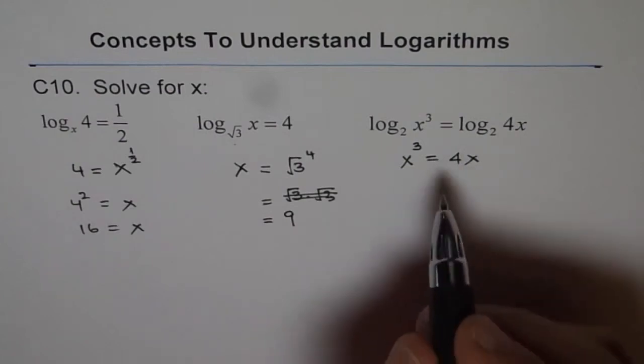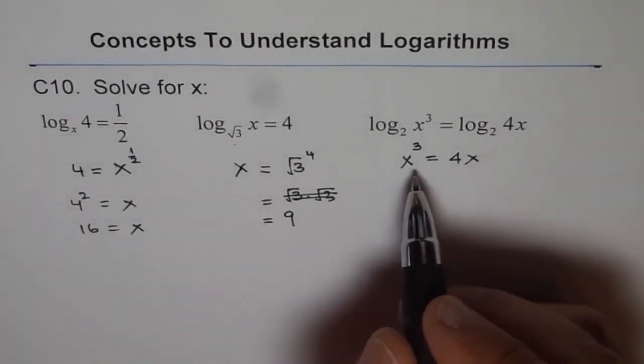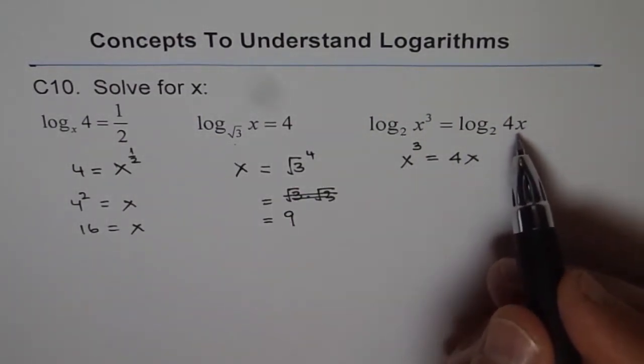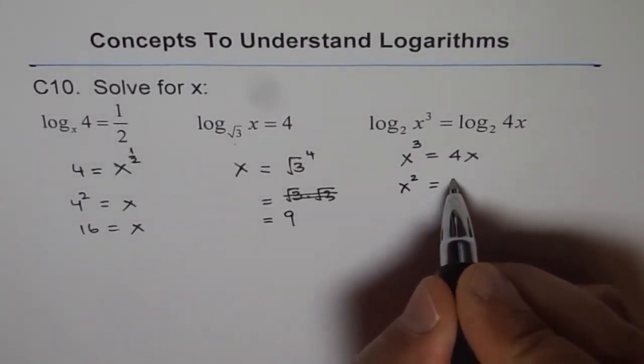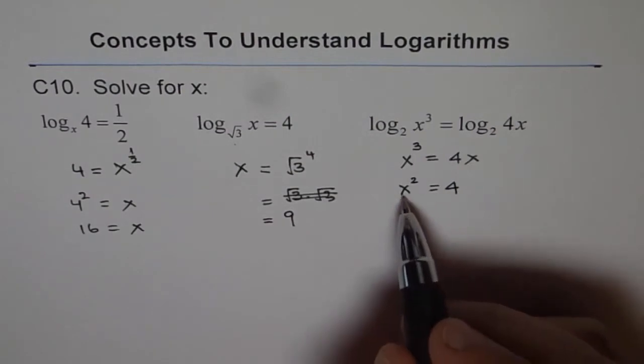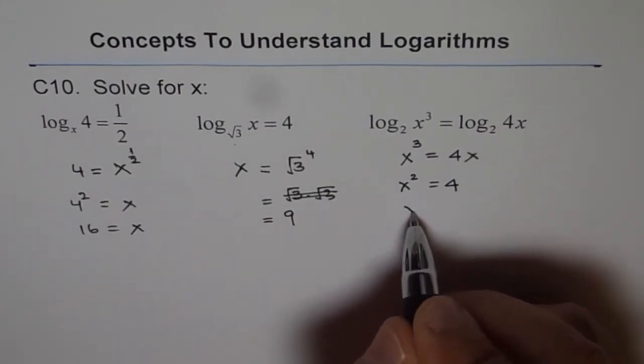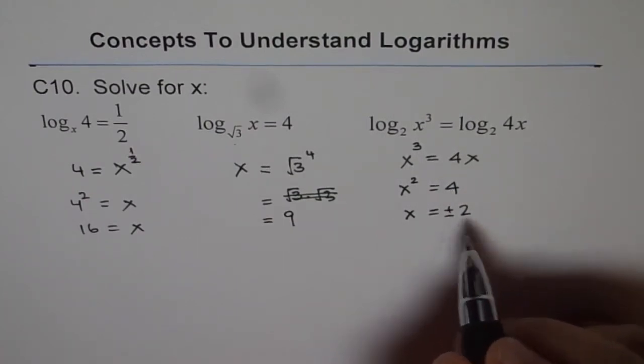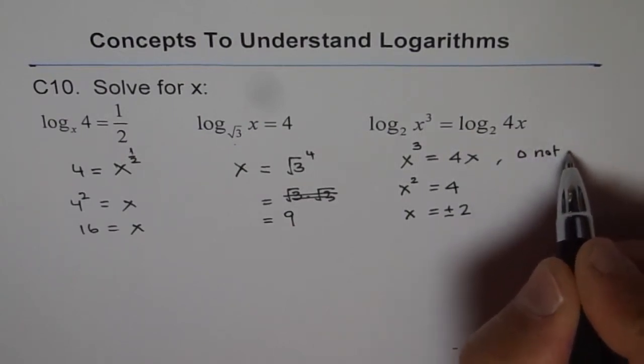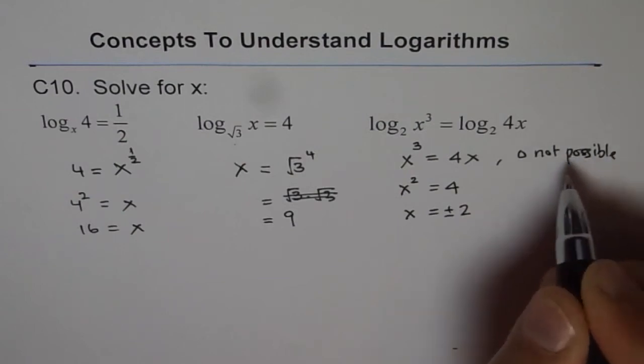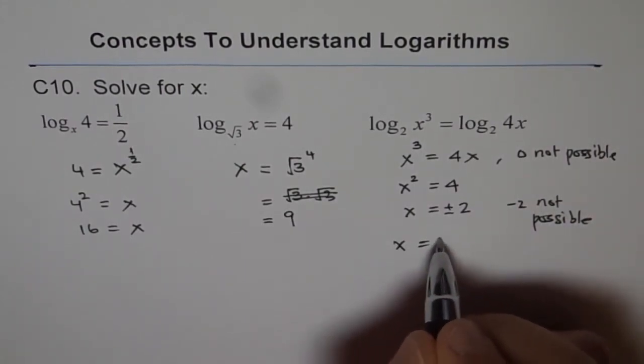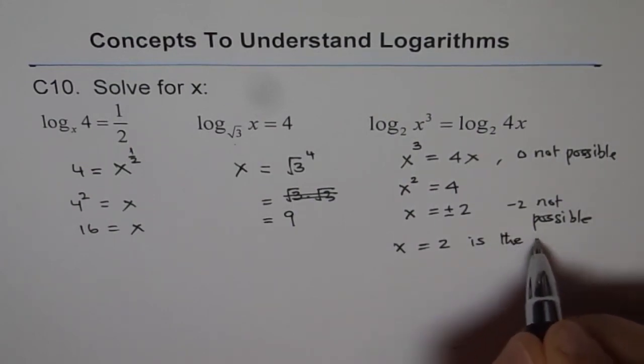We can say either x equals to 0, that is one solution, but x cannot be 0 for log. Therefore, the other solution is that x squared equals to 4. x squared equals to 4 gives us two solutions, plus or minus 2, but 0 is not possible, so we eliminated that solution. Negative 2 is not possible because it is not in the domain. Therefore, x equals to 2 is the only solution.